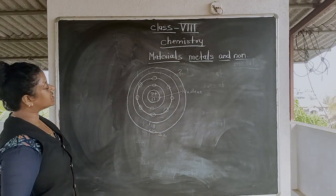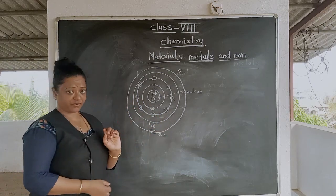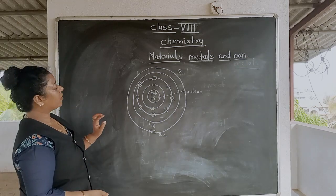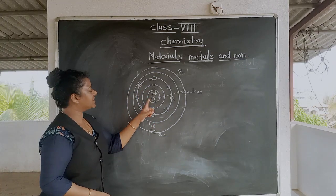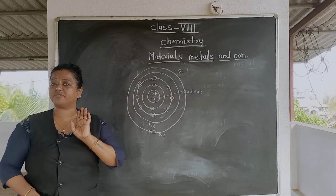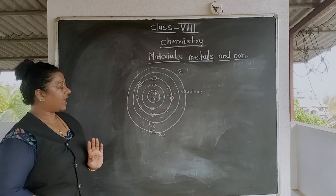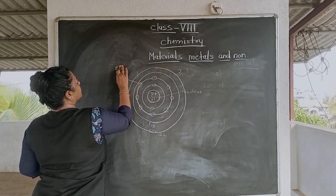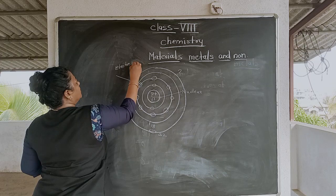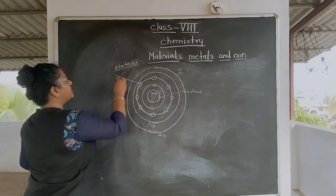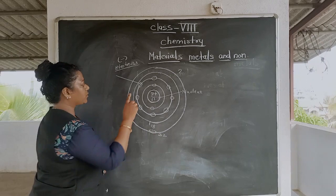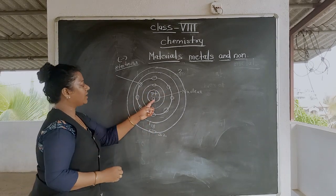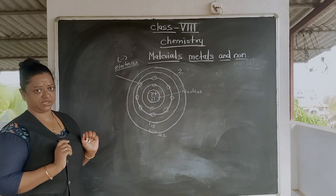This is the structure of an atom, and this is the nucleus. The nucleus is composed of positive protons and chargeless neutrons — neutrons do not have any charge. The electrons revolve around the nucleus in the shells. Electrons are always denoted by a negative sign, and protons are always denoted by a positive sign.